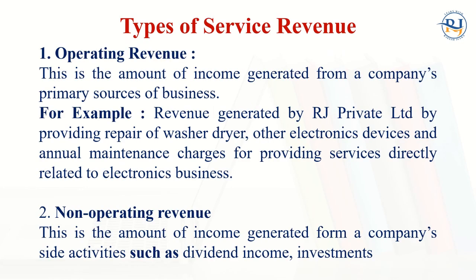Operating revenue is the amount of income generated from the company's primary source of business. For example, revenue generated by RJ Private Limited by providing repair of washer dryers, other electronic devices, and annual maintenance charges for services directly related to the electronics business.